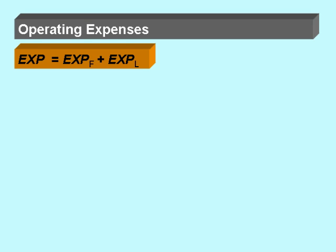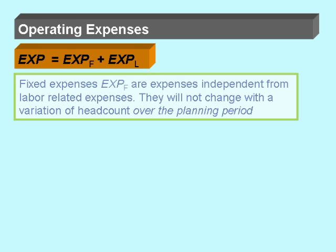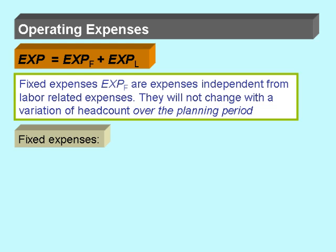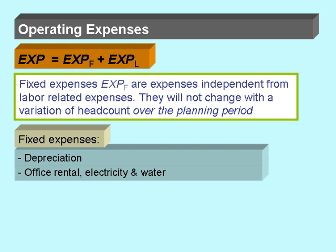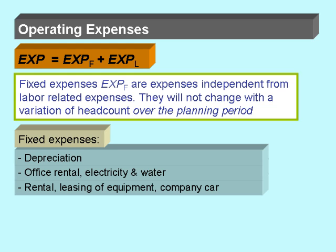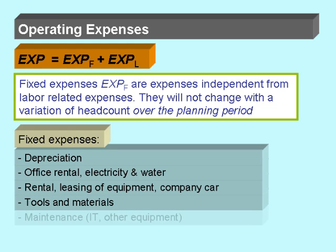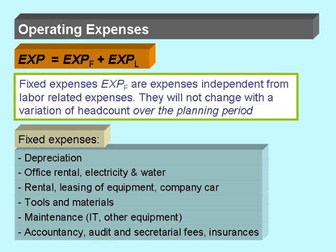We will categorize the operating expenses in fixed expenses and labor expenses. Fixed expenses will not change with a variation of headcount over the planning period. For example: depreciation, office rental, costs for electricity and water, rental or leasing of equipment or a company car, tools and material, maintenance costs, accountancy audit and other fees, and insurances.